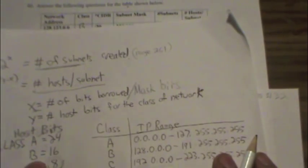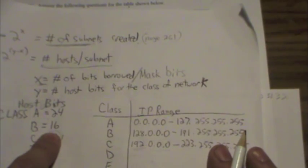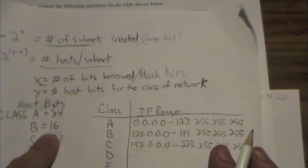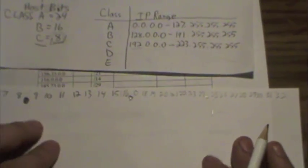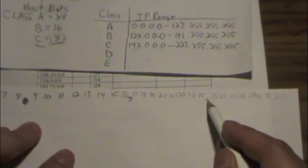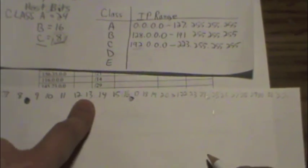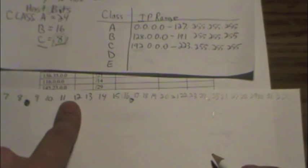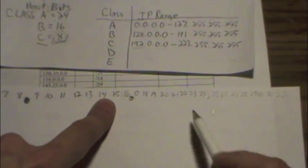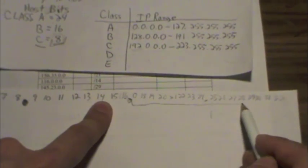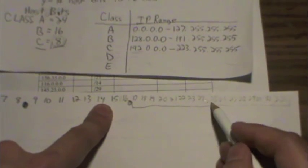If we're dealing with a Class B address, the number of host bits is 16. So that means that the first two octets don't matter, and the number of host bits we care about are here.